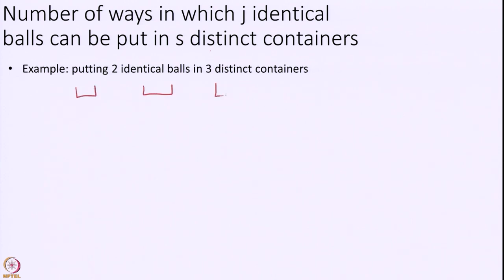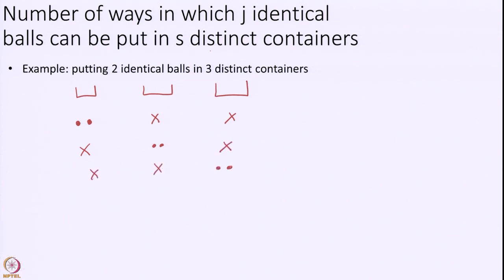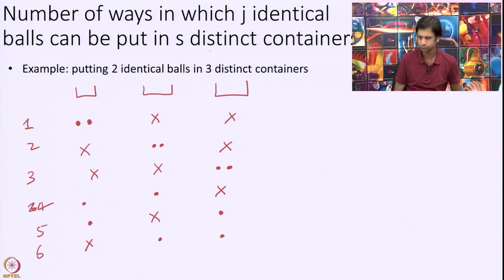With 2 balls and 3 containers, the 6 configurations are: both balls in container 1; both in container 2; both in container 3; one ball each in containers 1 and 2; one ball each in containers 1 and 3; one ball each in containers 2 and 3. Those are all 6 possibilities. Remember the 2 balls are identical, so there is no other way to put these 2 balls in 3 containers.